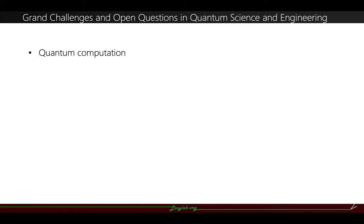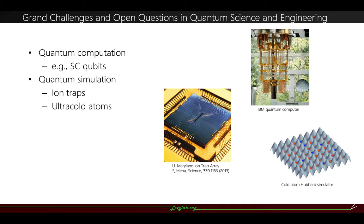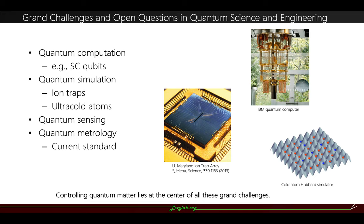There are questions such as how could we achieve quantum computation, and there are examples such as superconducting qubits. How can we do quantum simulation? We know there are ion traps and ultracold atoms, and other questions such as quantum sensing and quantum metrology. We believe that controlling quantum matter lies at the center of all these grand challenges.